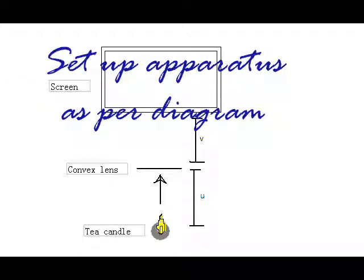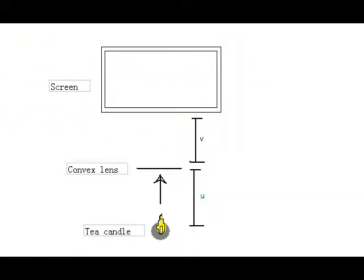First, set up the apparatus as shown in the diagram, putting the tea candle, convex lens, and white screen where we will project the image all in a straight line.